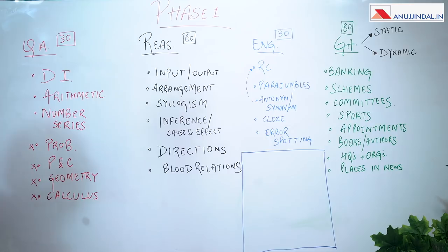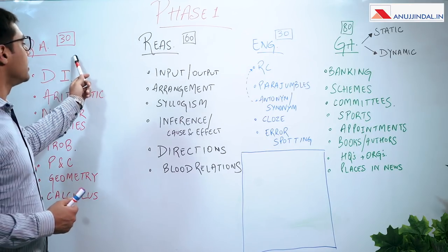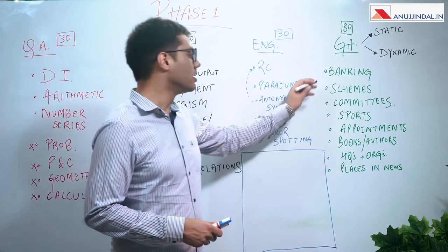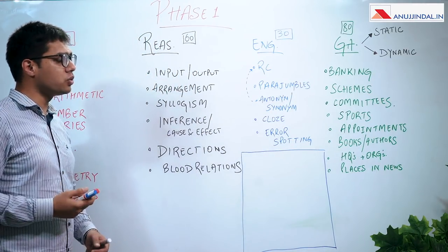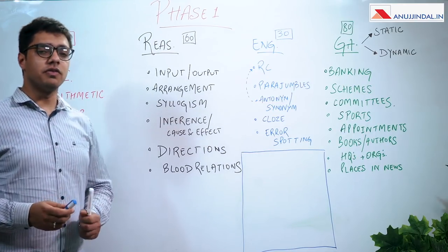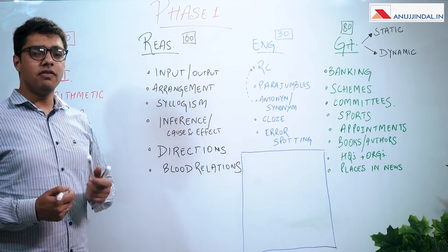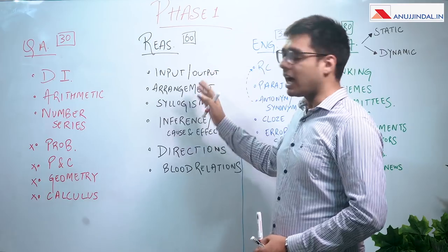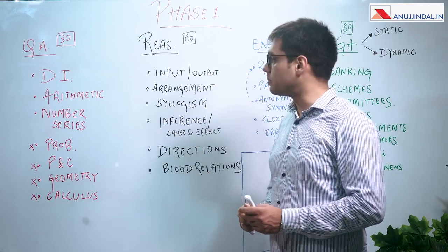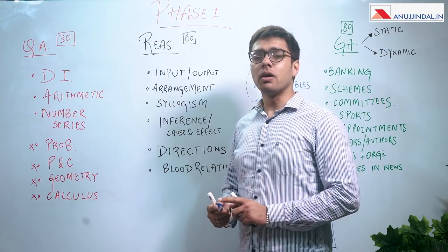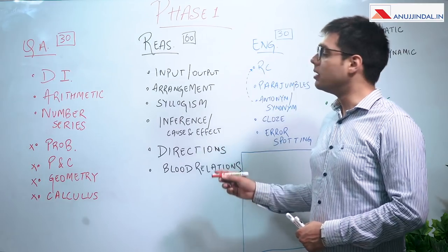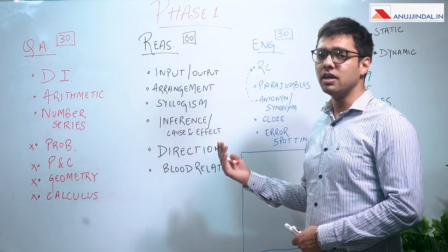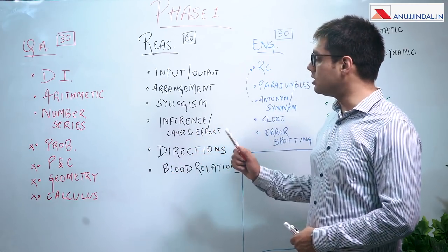What I have done is basically listed under each of the four sections for Phase 1 and broadly listed the kind of topics and questions which are asked. But before we go there, there are two aspects I'd like to discuss. The first is the need for giving equal weightage or time in each section, and also how to actually manage time in the examination, because Phase 1 is more importantly about how you attempt the paper than how much you know.